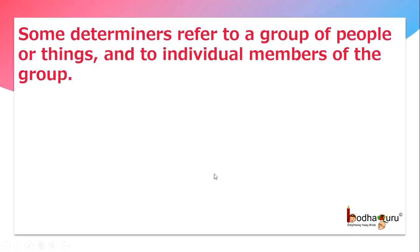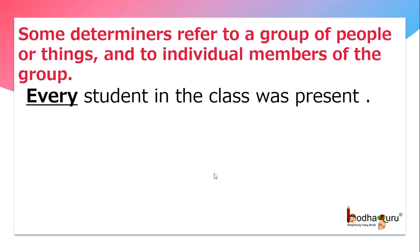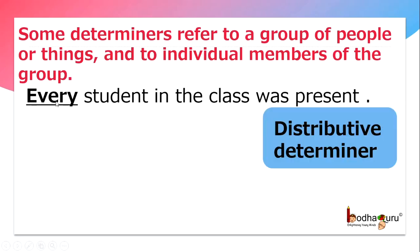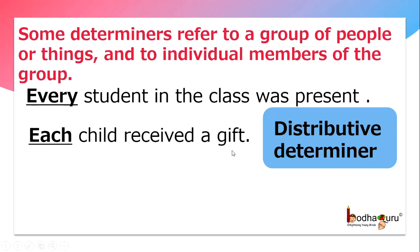Now, some determiners refer to a group of people or things and also to individual members of the group. For example, every student in the class was present. Here, 'every' is an example of a distributive determiner — it is coming before the noun. Each child received a gift. Here, we are referring to individuals with 'each', and 'each' is an example of a distributive determiner.